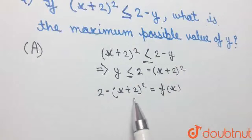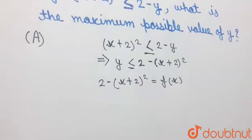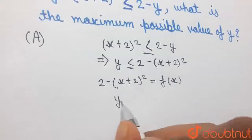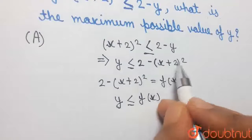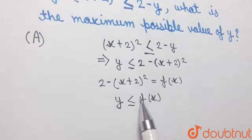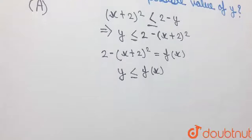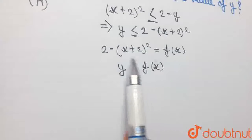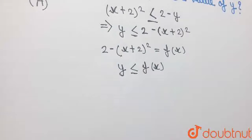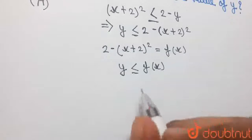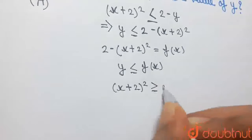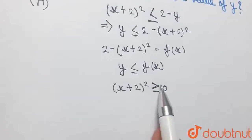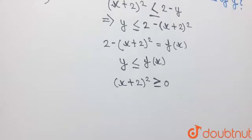Let us represent 2 − (x + 2)² by f(x). So this inequation can also be written as y ≤ f(x), because 2 − (x + 2)² has been written equal to f(x). Now, considering this term, (x + 2)² will always be greater than or equal to 0, because the square of any expression is always non-negative.